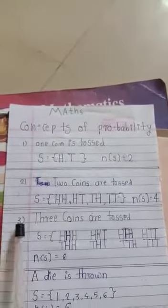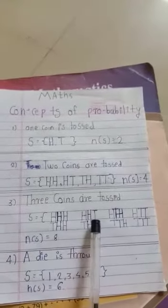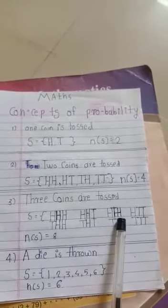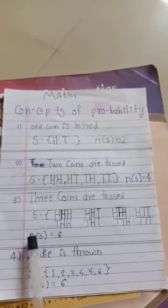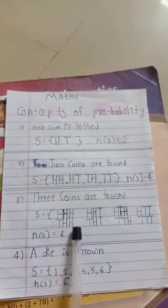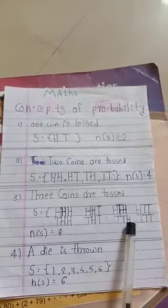Three coins are tossed. S is equal to HHH, HHT, HTH, HTT, THH, THT, TTH, TTT. N of S is equal to 8.